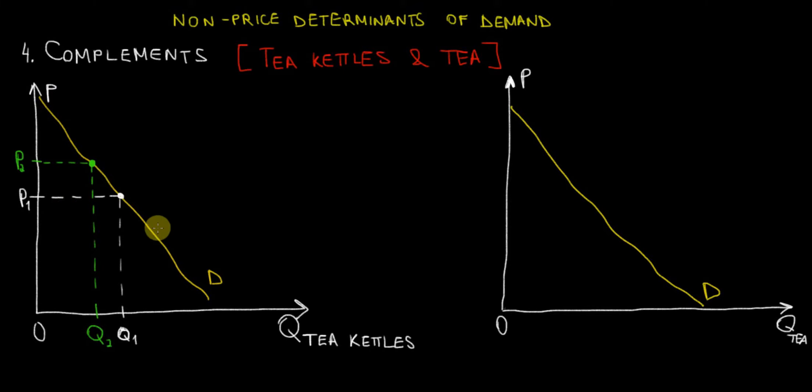Suppose that here on the left side we have the demand curve for tea kettles. We have an initial price of P1 and a corresponding initial quantity of Q1.